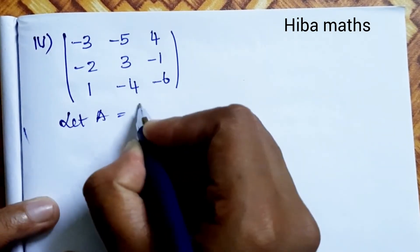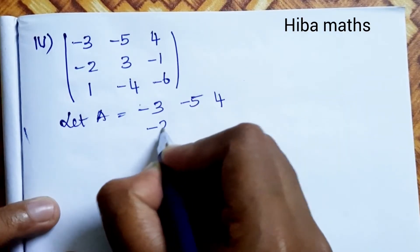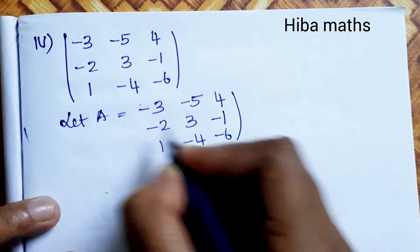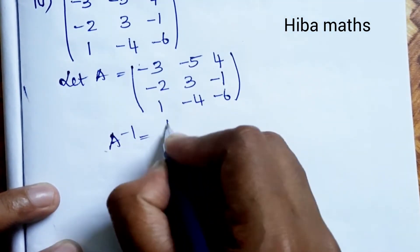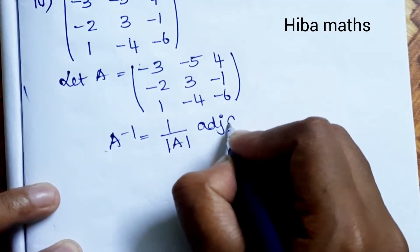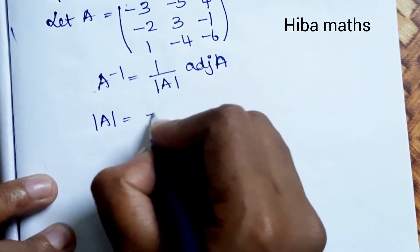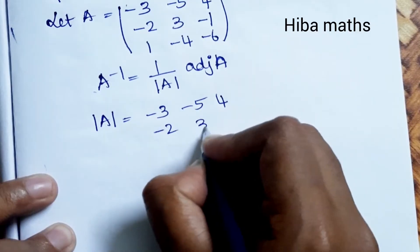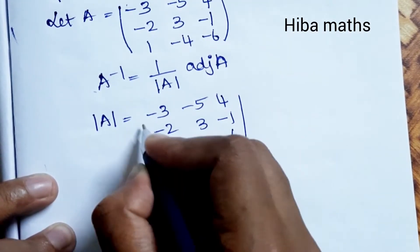Fourth subdivision: Let A = [-3, -5, 4; -2, 3, -1; 1, -4, -6]. Now computing A inverse using the formula A inverse = (1/|A|) × adjoint of A.